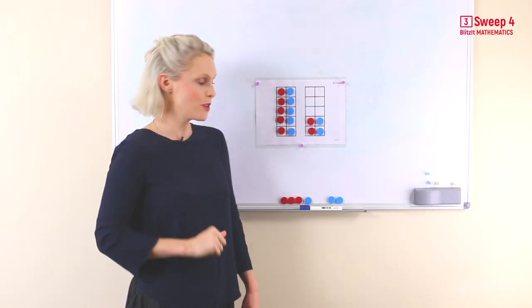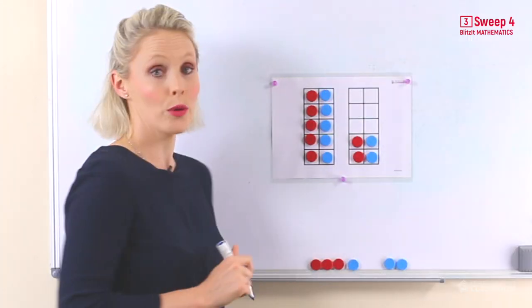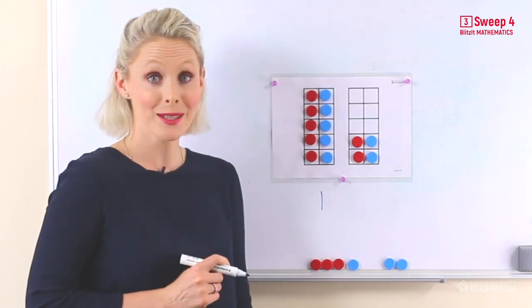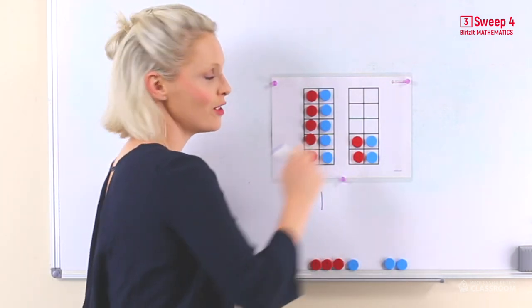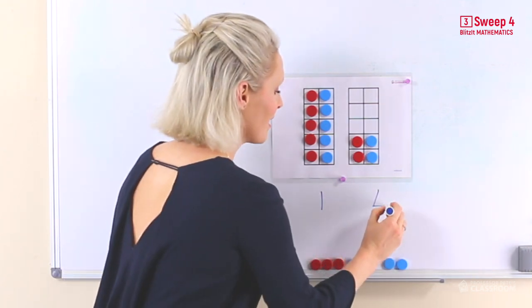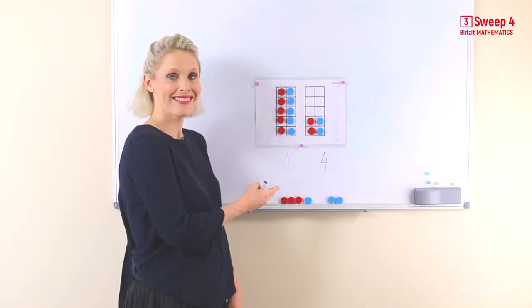Now use that great visual memory and have a look. Here we have 1 group of 10, so we put a 1 in our tens column. And here you can see that there are 4. So double 7 equals 14.